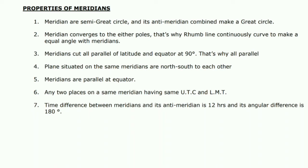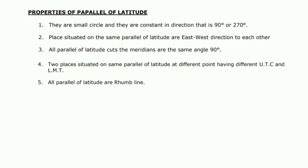Number four — places situated on the same meridian are north or south of each other. Number five — meridians are parallel at the equator. Number six — any two places on the same meridian have the same UTC and LMT; we will discuss UTC and LMT in the time chapter. Number seven — the time difference between a meridian and its anti-meridian is 12 hours, and the angular difference between them is 180 degrees.